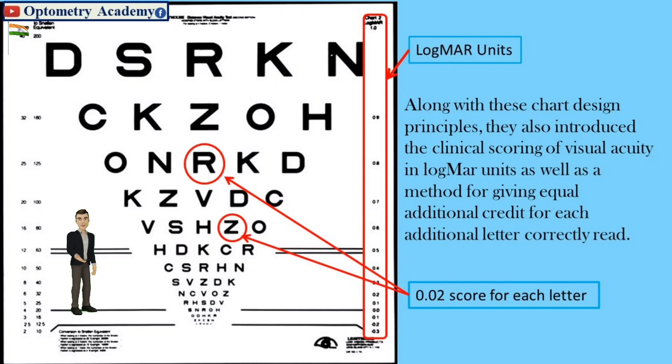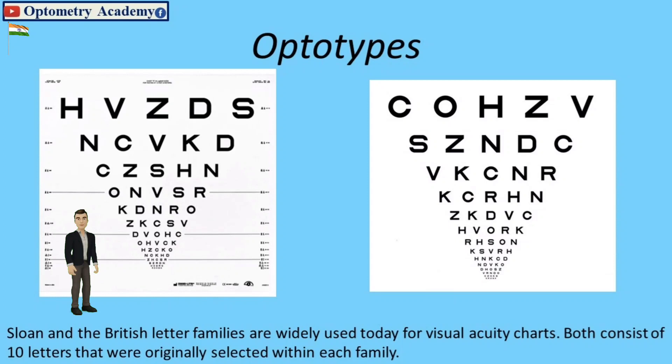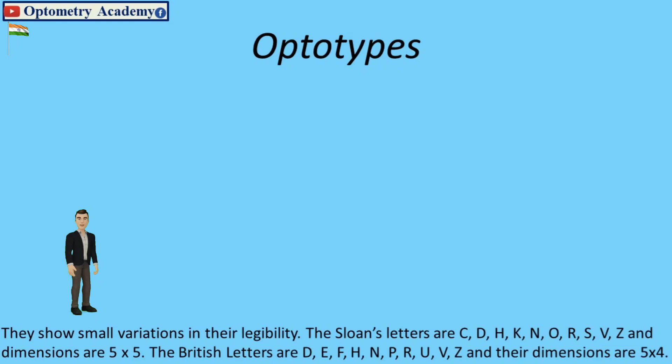0.02 score for each letter. Optotypes Sloan and the British letter families are widely used today for visual acuity charts. Both consist of 10 letters that were originally selected within each family. They show small variations in their legibility. The Sloan's letters are C, D, H, K, N, O, R, S, V, Z and their dimensions are 5 x 5.